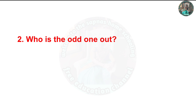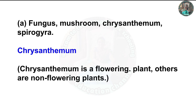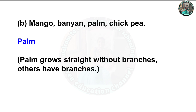Second question: who is the odd one out? A — fungus, mushroom, chrysanthemum, and Spirovera. The answer is chrysanthemum. It is a flowering plant; others are non-flowering plants. B — mango, banyan, palm, chickpea. The odd one out is palm. The palm grows straight without branches; others have branches.